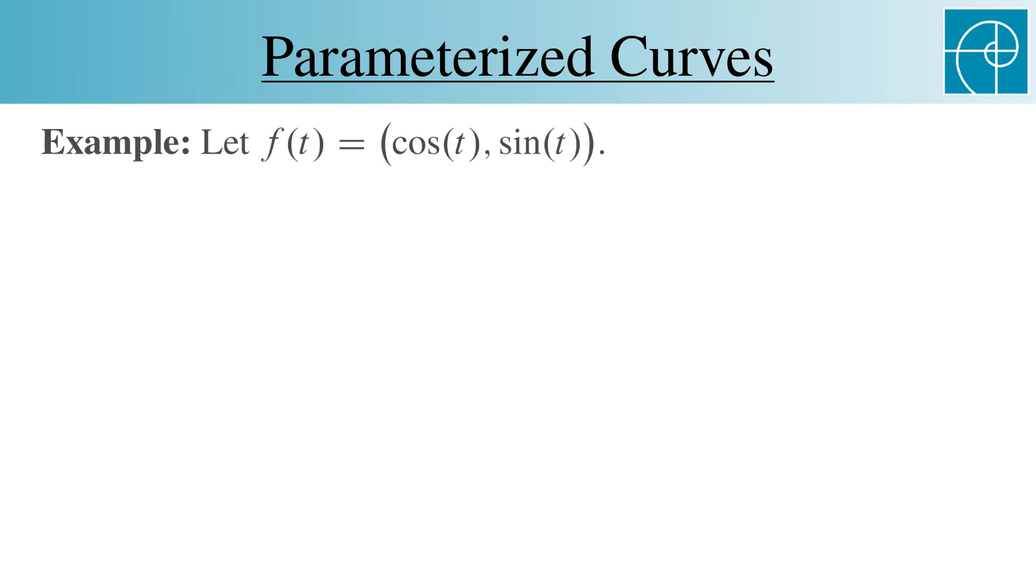For example, let f(t) = (cos(t), sin(t)). Let's graph this by following the example we saw at the beginning of the video. We'll put a copy of the independent variable's axis here, and we'll graph the range here in the x-y plane. We'll let the independent variable range from 0 to 2π.